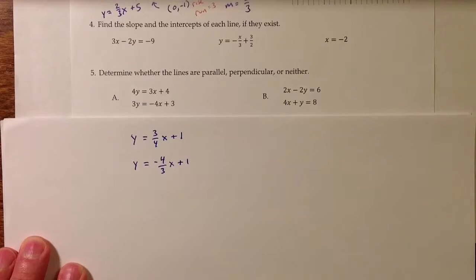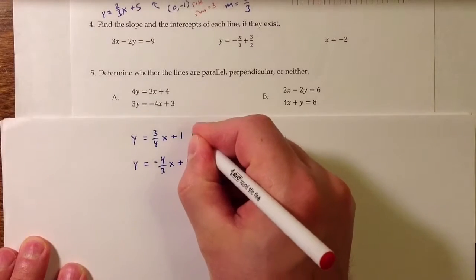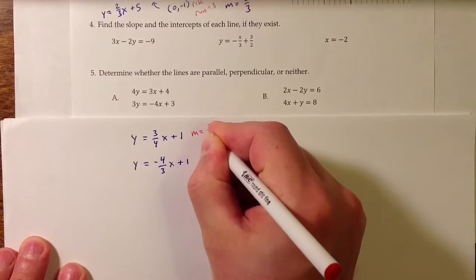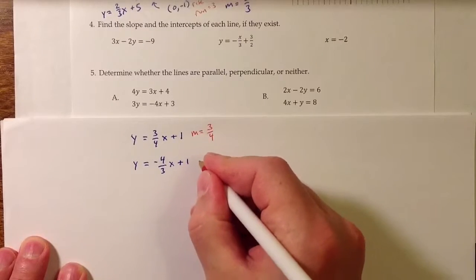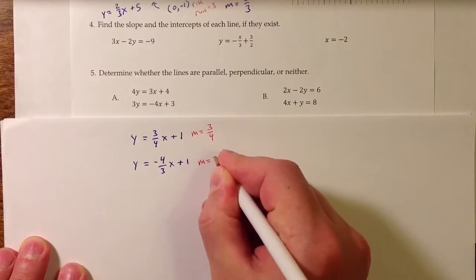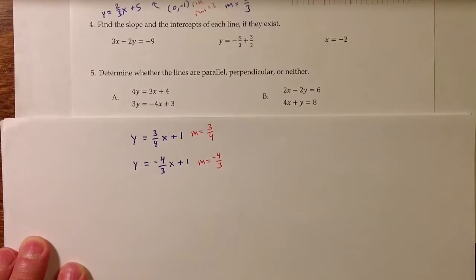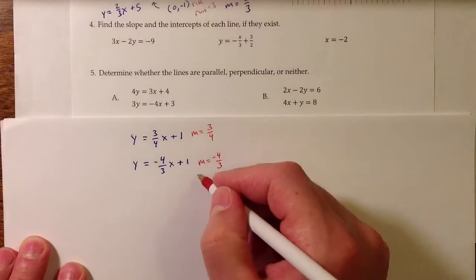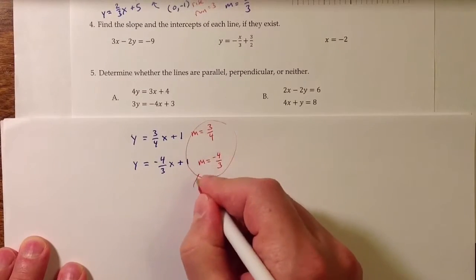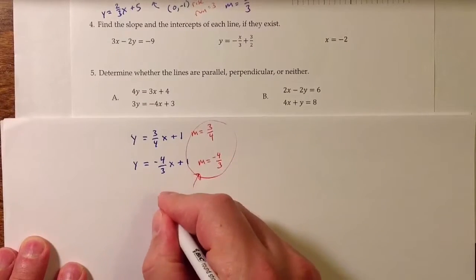And so the slope for the first line is 3 fourths. The slope for the second line is negative 4 over 3, negative 4 thirds. And that's the situation. That's exactly when we know that the lines are perpendicular.